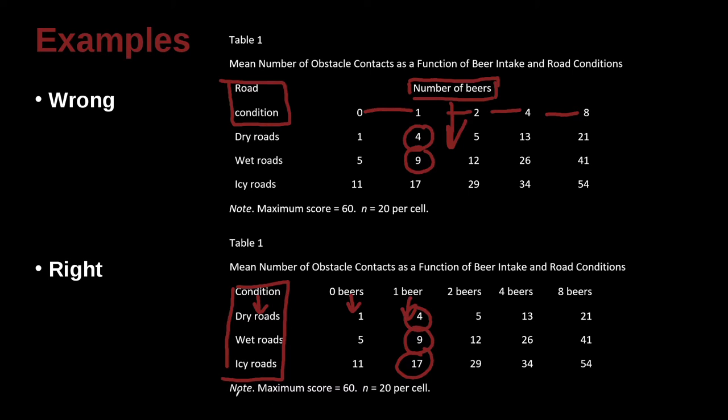And then down here we have a nice note, maximum score 60 and the sub sample of 20 per cell. So in each cell we have 20 people, 20 participants. So I think the key here is keeping that column heading very clear.